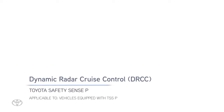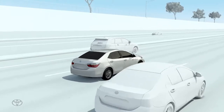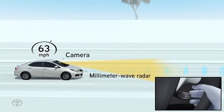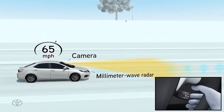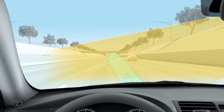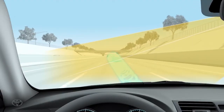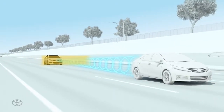Dynamic Radar Cruise Control functions similarly to conventional constant speed cruise control in that it helps vehicles travel at a consistent speed set by the driver. But this system adds a vehicle-to-vehicle distance control mode which assists the driver with helping to maintain a preset distance to a preceding vehicle when the preceding vehicle is traveling at lower speed.